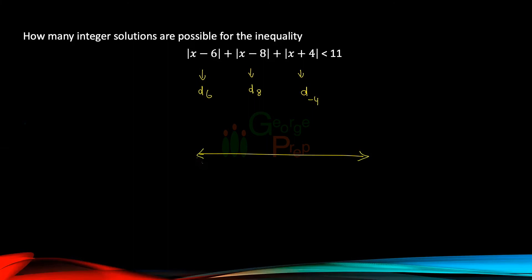So if I'm going to take a number line and plot these points, we have got minus 4, 6, and 8. Now if I want to minimize this, I'll have to place x between this, right? So I can find the minimum value by placing x on 6.